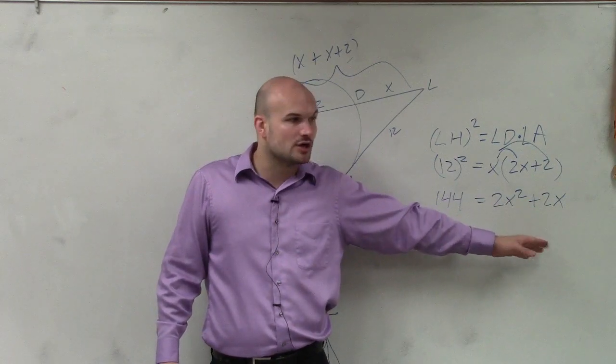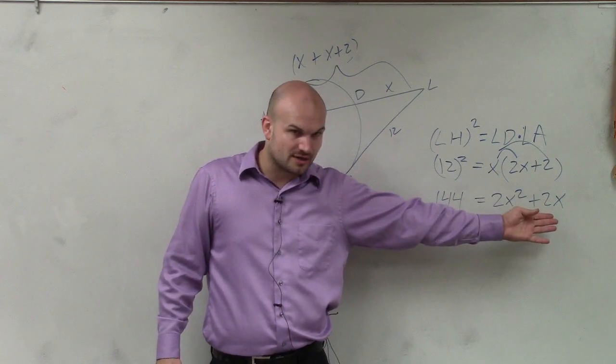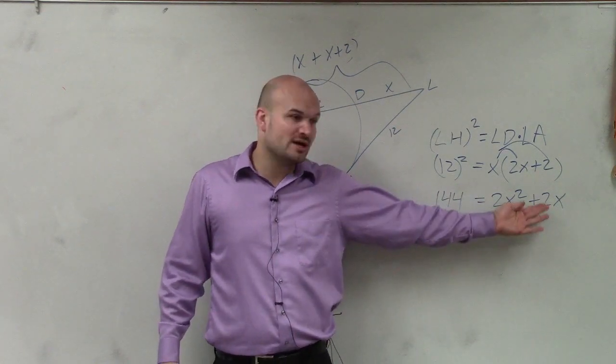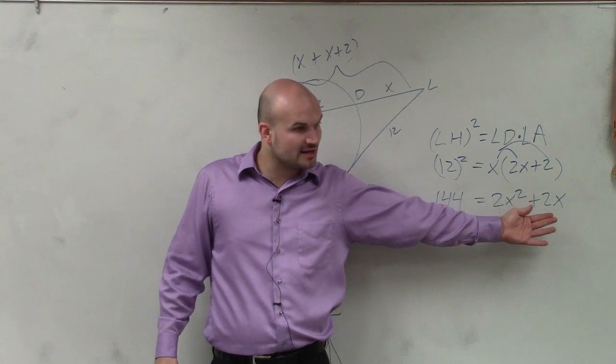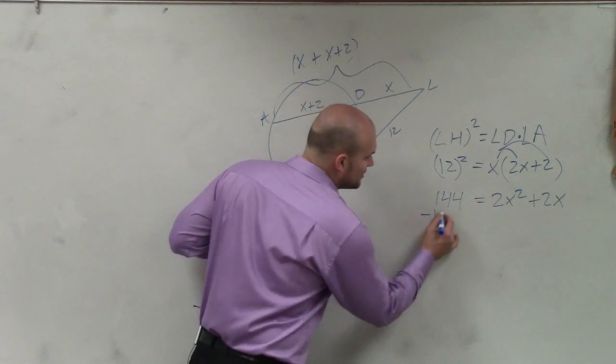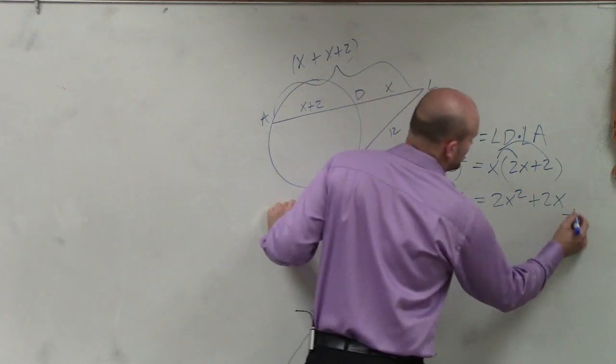They're not the same term. One is squared. One is linear. So we can't undo. We can't solve for one of the X's. So when we have an equation that's in this form, which is like a quadratic form with two X's, we have to factor. So to factor, you would have to set it equal to 0.